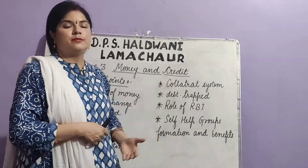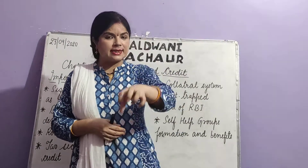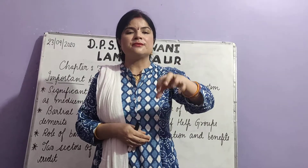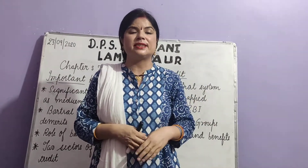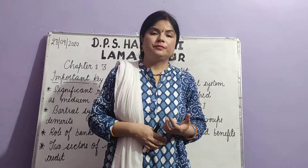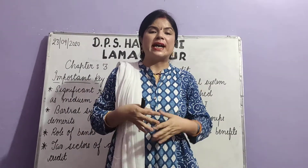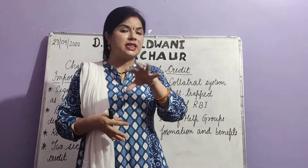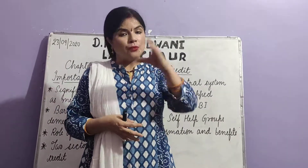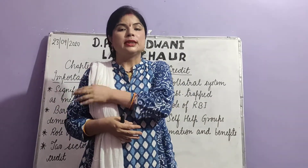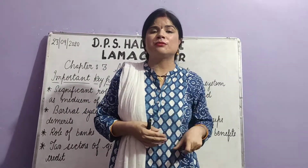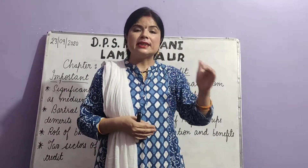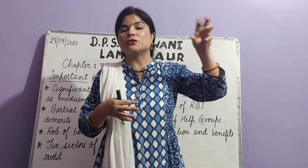Next key point: collateral system. As already discussed, under the collateral system, we have to keep something as a guarantee in banks if we want to take a loan — like property papers, papers of land, livestock, any jewellery, or a vehicle. These kinds of things we keep as a guarantee in banks so that, in case of becoming unable to repay that loan, banks can take all these things away from us and recover the amount of money we took as a loan.